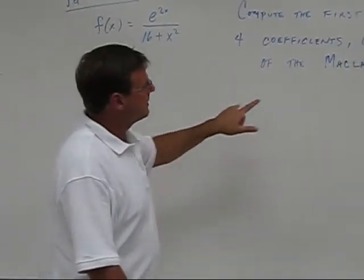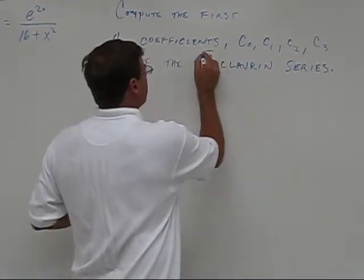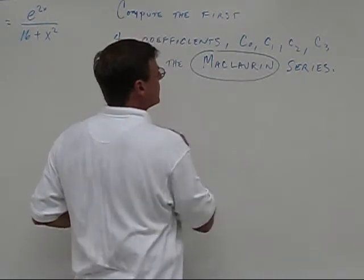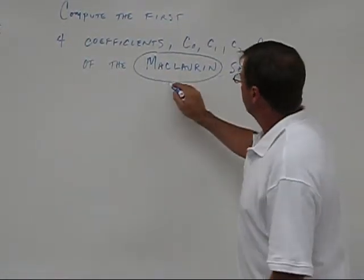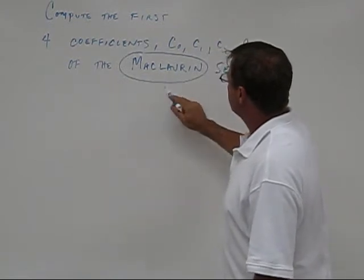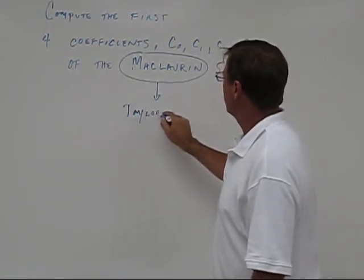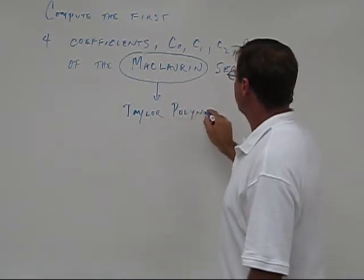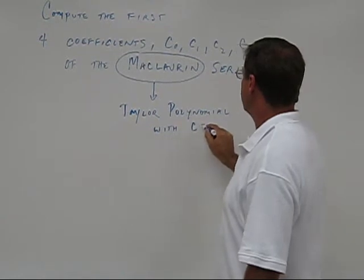So the first thing is to discuss what the Maclaurin series is. This name is a special case of the Taylor polynomials. All the Maclaurin series is, is the Taylor polynomial with c equals 0.